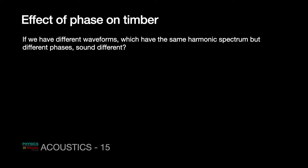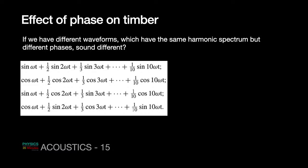If we have different waveforms which have the same harmonic spectrum — same harmonics are present — but their phases differ, will the sound differ? The answer is yes. I have an example of four combinations of waves. Remember you can try all of these in Audacity — there is a dropdown menu called Generate, and you can generate a sine wave at any given frequency. You can add a track by going to the track menu and selecting Add Track.